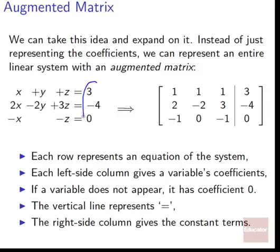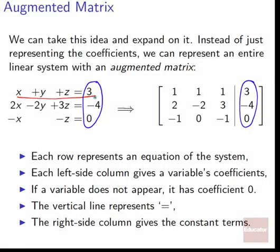Previously, we didn't have the constants for the equations — what was on the right side of the equal sign. Now we have that show up on the right side. So now we've got the coefficients and what each of those equations is equal to. Each row represents an equation of the system: x plus y plus z equals 3 is 1, 1, 1, 3 — the first column is the coefficient on x, the second on y, the third on z, and it all comes together to equal 3.